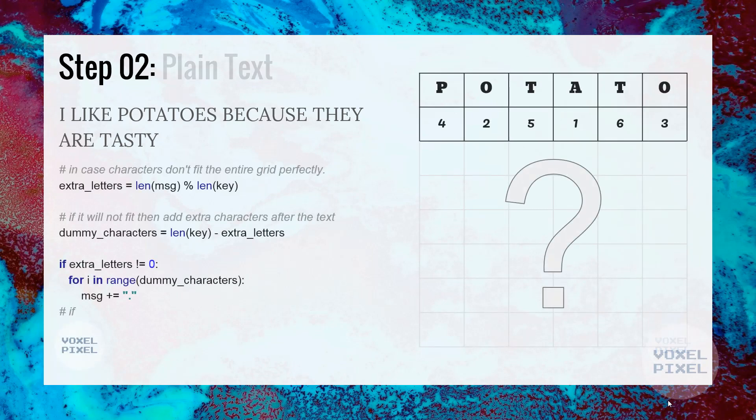Next, we will check if our plain text fits perfectly into a grid. We will calculate grid size in the next step, but here to check if our plain text will fit into the grid, we will take modulus between length of the message and keyword length. If our modulus returns 0, then it will fit perfectly. Otherwise, we will append extra dummy characters at the end of the message.